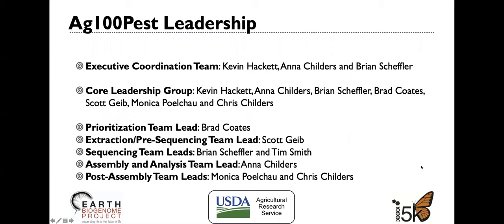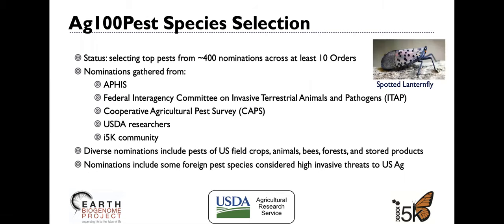The Ag 100 pest leadership team has an executive coordination team of Kevin Hackett, Anna Childers, and Brian Scheffler, as well as a core leadership group which are the leads of a variety of teams that describe the different steps in the process including prioritization, extraction, pre-sequencing, sequencing, assembly and analysis, and post-assembly. We selected the top pests from over 400 nominations across at least 10 orders. These nominations were gathered from USDA APHIS, Federal Interagency Committee on Invasive Terrestrial Animals and Pathogens or ITAP, the CAP survey, USDA researchers, and the Arthropod Genomics Community or the I5K community.